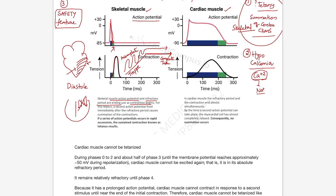The same thing will not happen in cardiac muscle because during most phases of the cardiac action potential — phases 0 to 2 and about half of phase 3 — the cardiac muscle cannot be excited. We call it the absolute refractory period. Even during phase 4, the cardiac muscle cannot be excited because it is in a relative refractory period. Cardiac muscle has a prolonged action potential, so it cannot contract in response to a second stimulus. Because it is in a prolonged state of refractory period, it cannot be excited, there is no summation, and therefore cardiac muscle cannot be tetanized like a skeletal muscle.